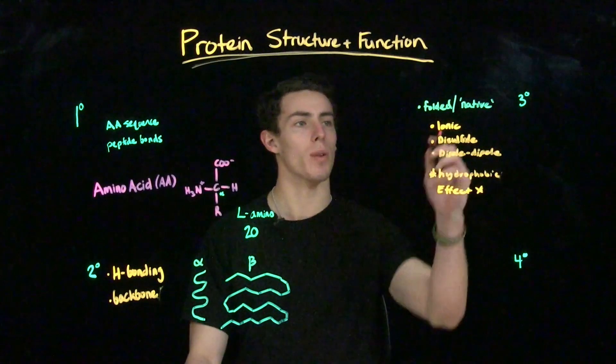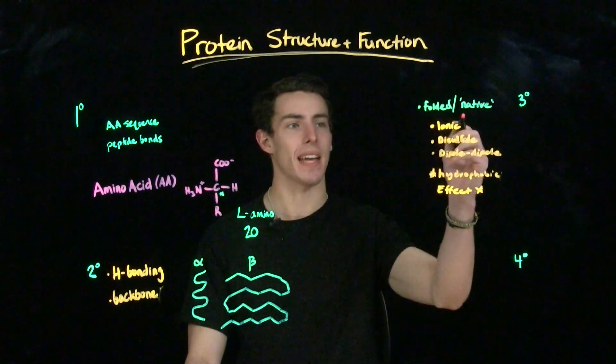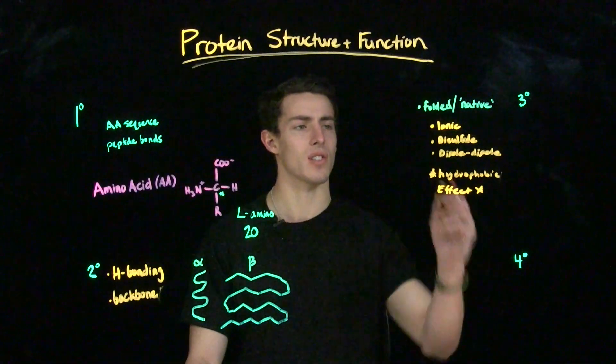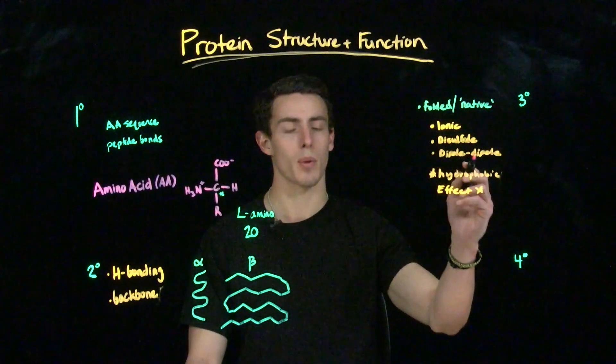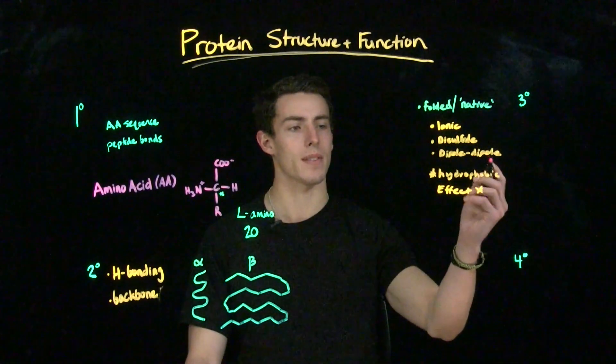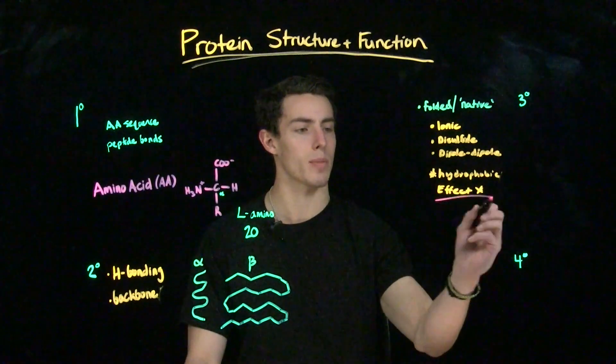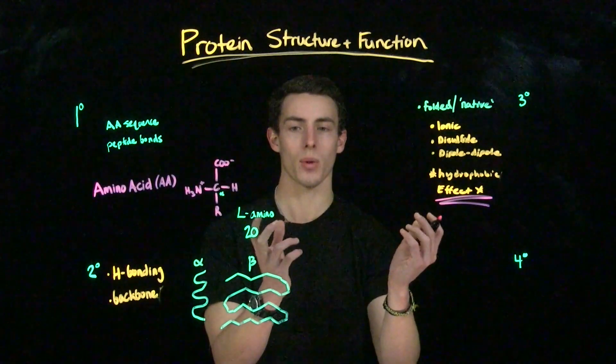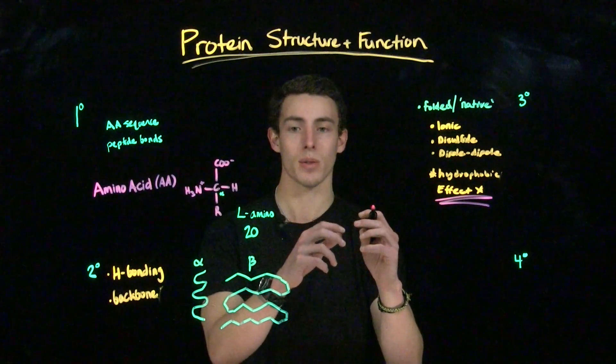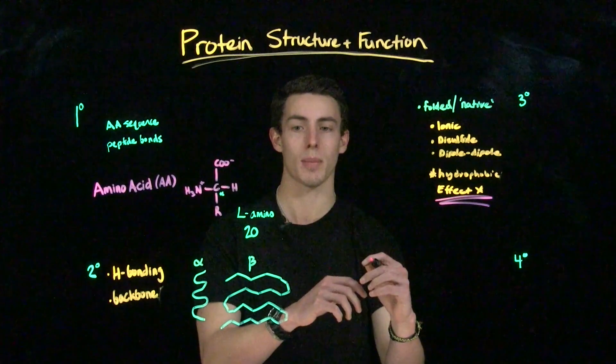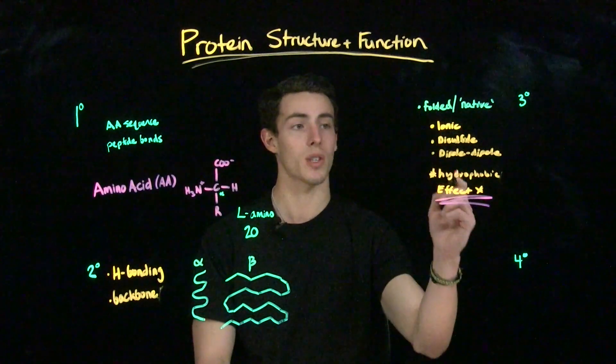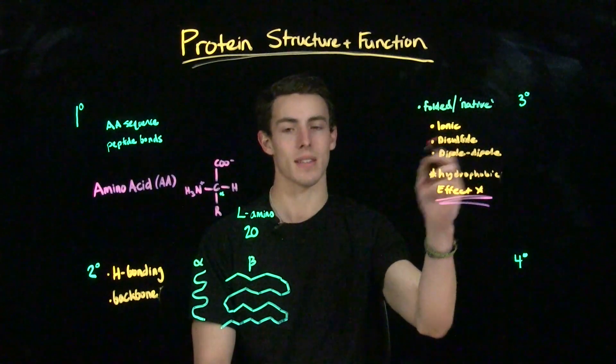Tertiary structure describes the folded, or as you may hear in some papers, the native structure of a protein. It's mediated and refined by interactions such as ionic, disulfide, or dipole-dipole interactions like hydrogen bonds. But the primary driving force behind tertiary structure is the hydrophobic effect, which causes protein folding by forcing hydrophobic groups together and excluding them from water, decreasing the entropy of the molecule and folding it into these native shapes, which are then refined by these other interactions.